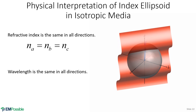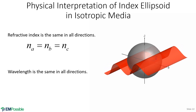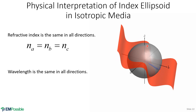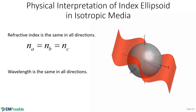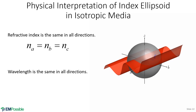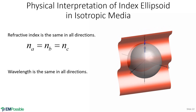Here's a neat way to visualize what index ellipsoids are telling us. The gray circle is the index ellipsoid for an LHI material. The blue arrow is the direction of a wave, and the red wiggly line is the wave itself. No matter what direction the wave is going, it always has the same period and travels at the same speed — no matter what direction it travels through this particular material.